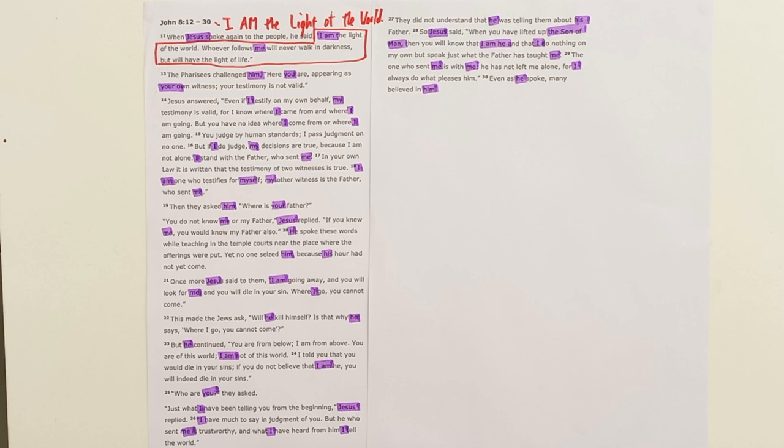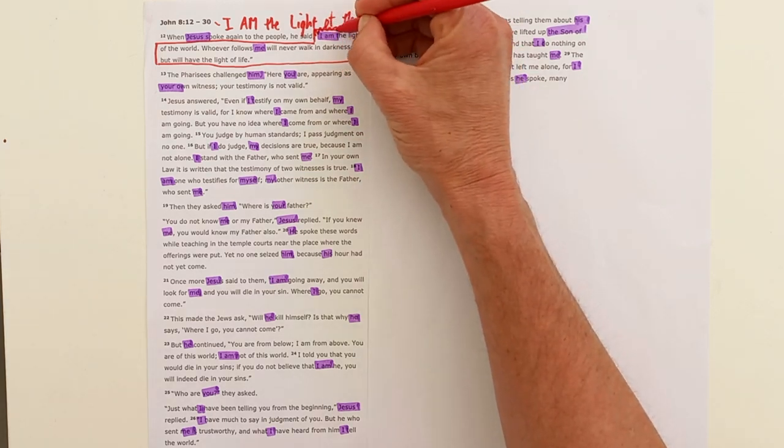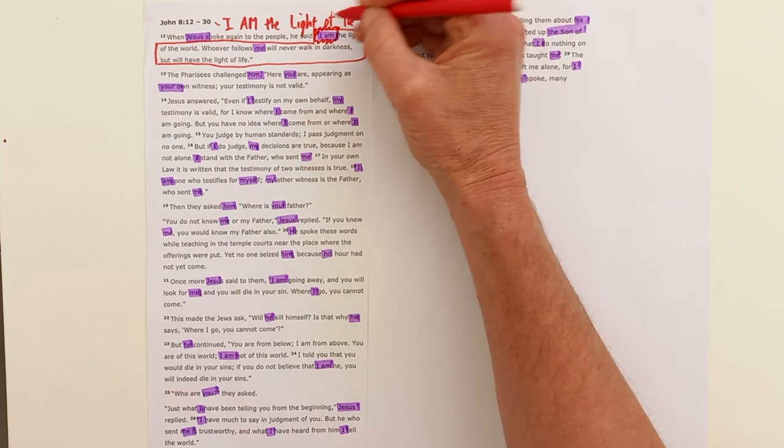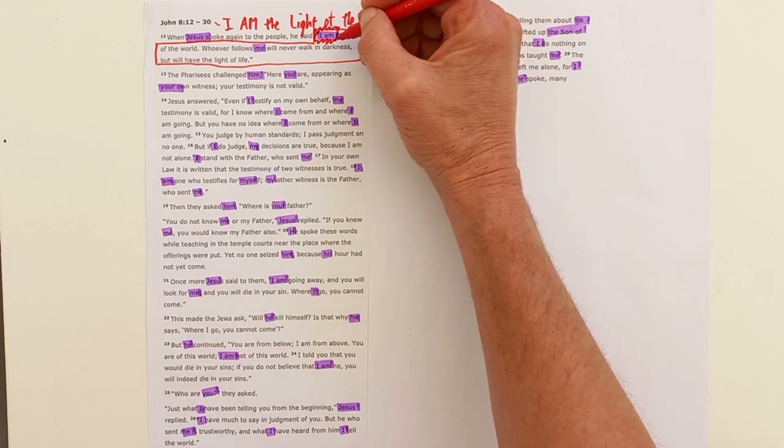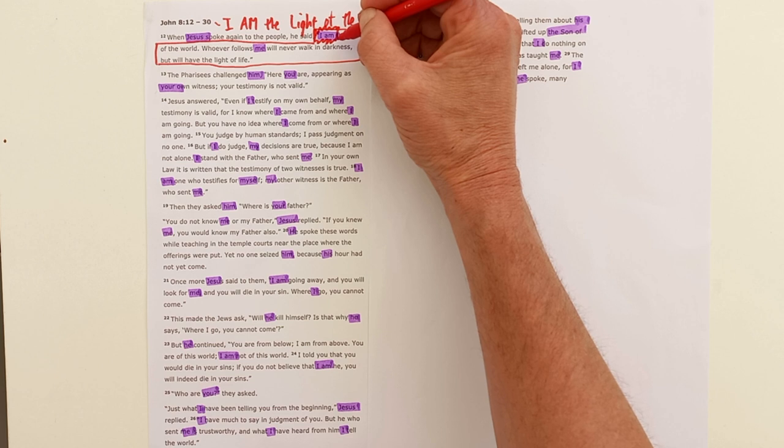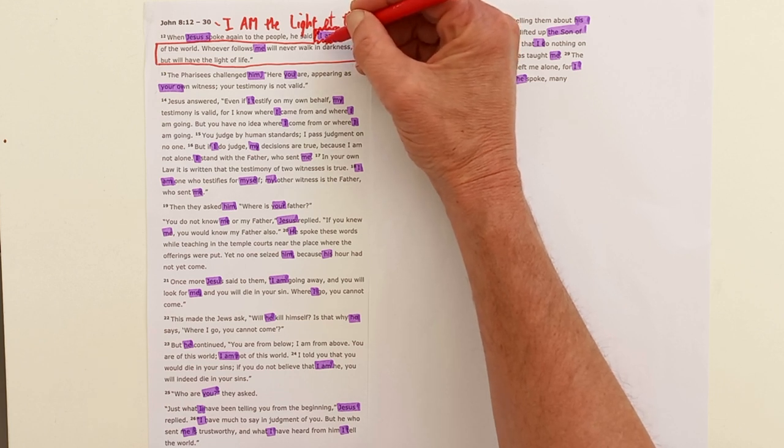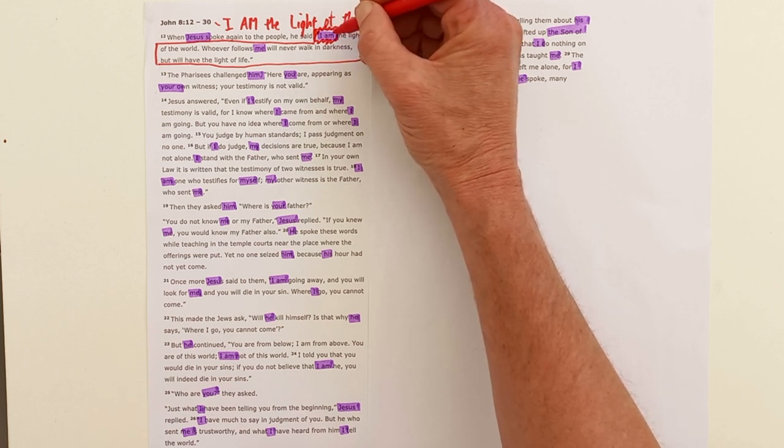Now I just want to single out a few of these 'I am' statements which are worth looking out for in John's gospel. They link us all the way back to Exodus chapter 3, where God introduced himself to Moses as 'I am,' giving himself that personal name, and Jesus in John's gospel takes that name for himself.